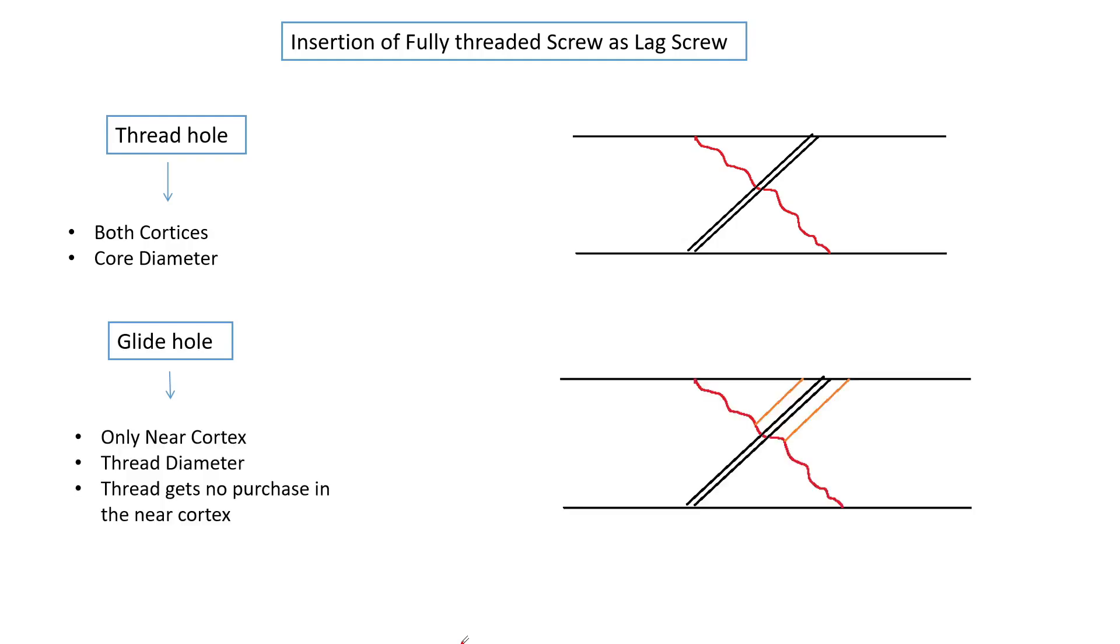The second hole is known as the glide hole which involves only the near cortex and is equal to the thread diameter of the screw, which ensures that the thread gets no purchase in the near cortex, which enables sliding of the proximal part of the screw.